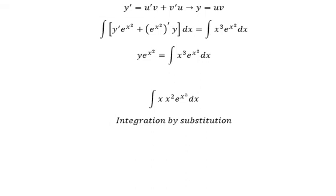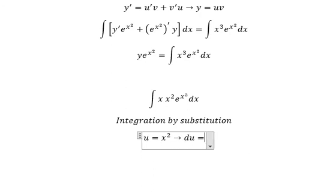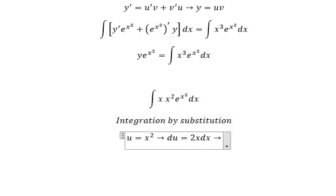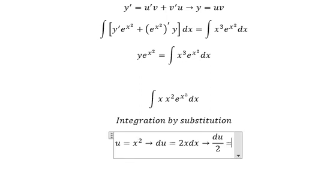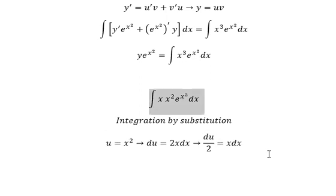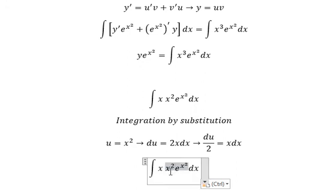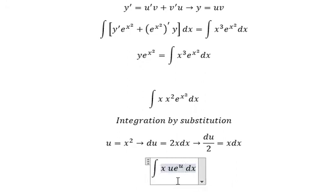So I will put u equal to x squared. If I take the first derivative of both sides, we have du equal to 2x dx. Because we don't have the number 2 here, so we divide both sides by 2. So x dx we change to du over 2, and x² we change to u.